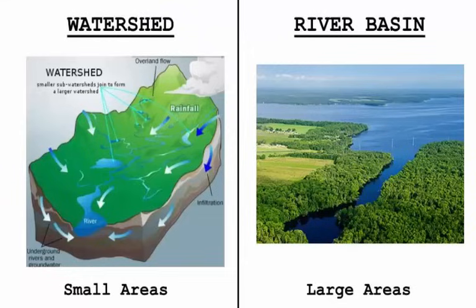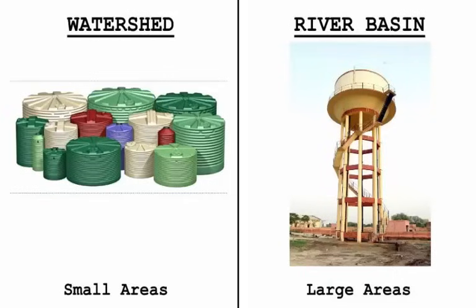There is a slight difference between a river basin and a watershed. Watersheds are small in area while river basins cover large areas. The meaning of watershed is 'shedding the water,' so it has to be in small portions. A river basin — which is the source of the river — can be due to melting of ice or collection of rainwater, and it covers a huge portion of land. Think of a river basin as a large water tank and watersheds as small portions where water is collected.